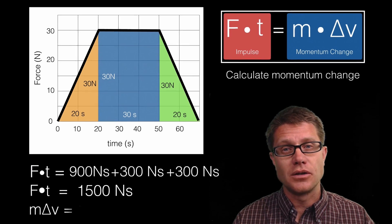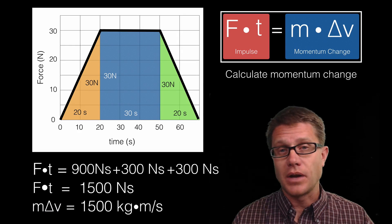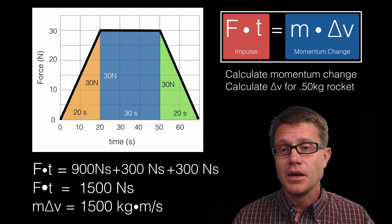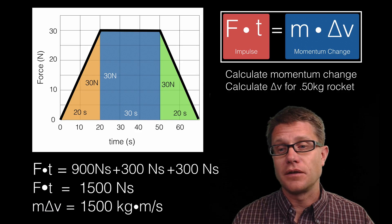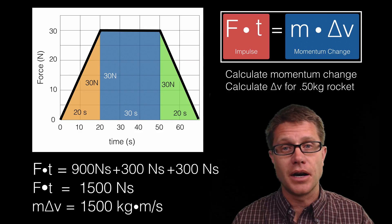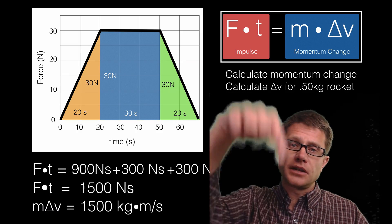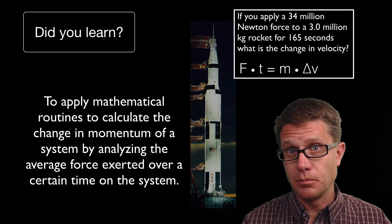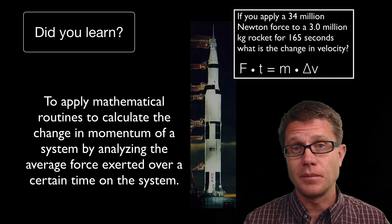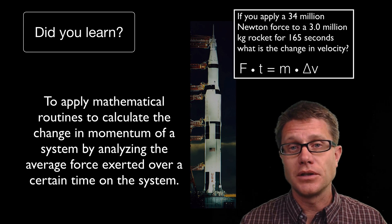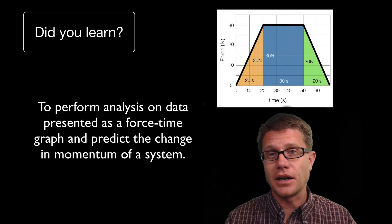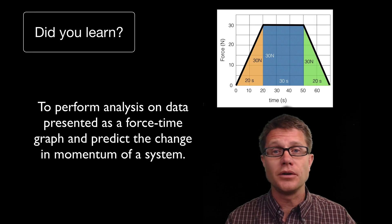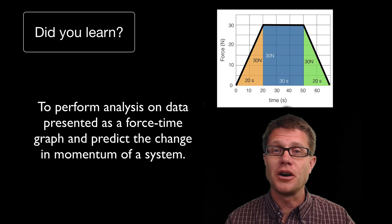Another question they could ask is similar to the rocket example: now we have a change in momentum of 1,500 kilogram meters per second — could you calculate the change in velocity if the mass is half a kilogram? Try that, and I will put the answer in the video description below. Did you learn to apply mathematical routines to calculate impulse — force times time — and know that it is equivalent to the change in momentum? Could you perform data analysis on a force-time graph to find both impulse and change in momentum? I hope so, and I hope that was helpful.